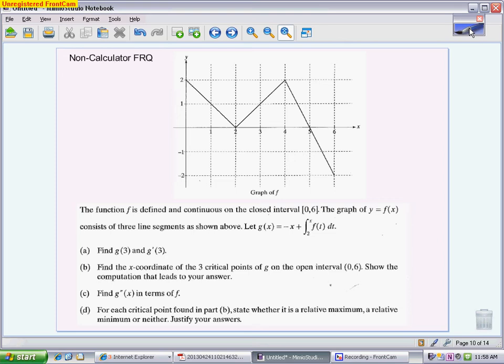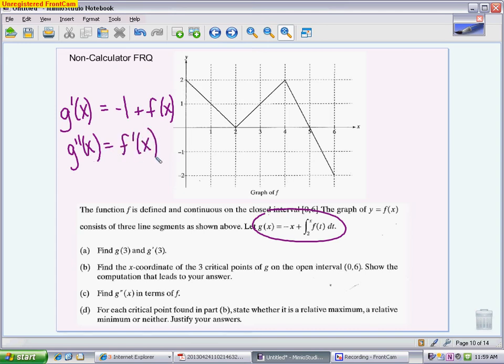This problem is giving you a graph of f like most of them do and then telling you what g of x is equal to. Slight difference here: g of x isn't just equal to the integral, it's equal to negative x plus an integral. So when I write my relationship, the idea is that when you derive g of x, you're not just going to get f of x, you're going to get negative 1 because that's the derivative of negative x plus f of x. And then when you derive again, you're going to end up with just f prime of x because the derivative of negative 1 will be 0.